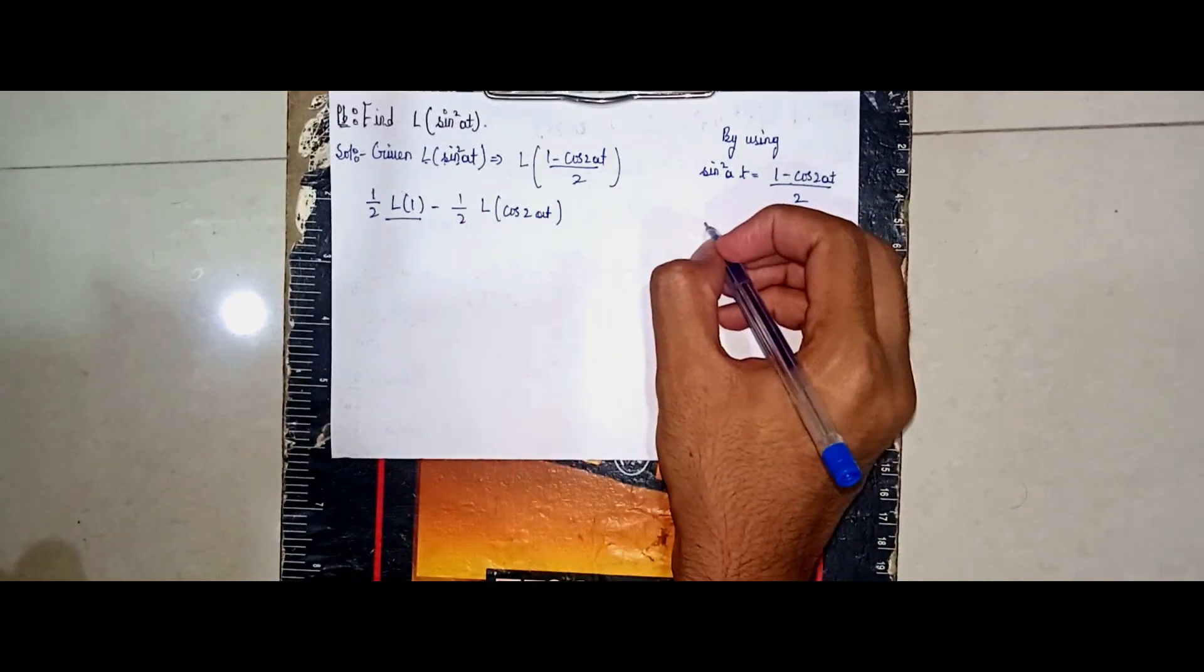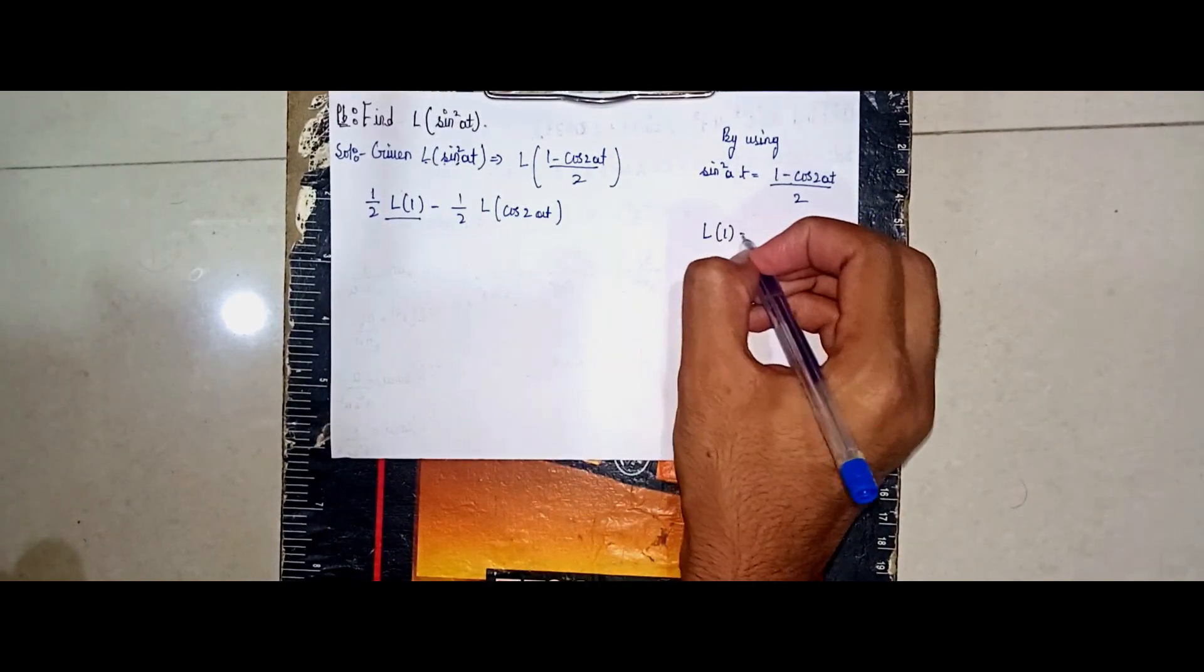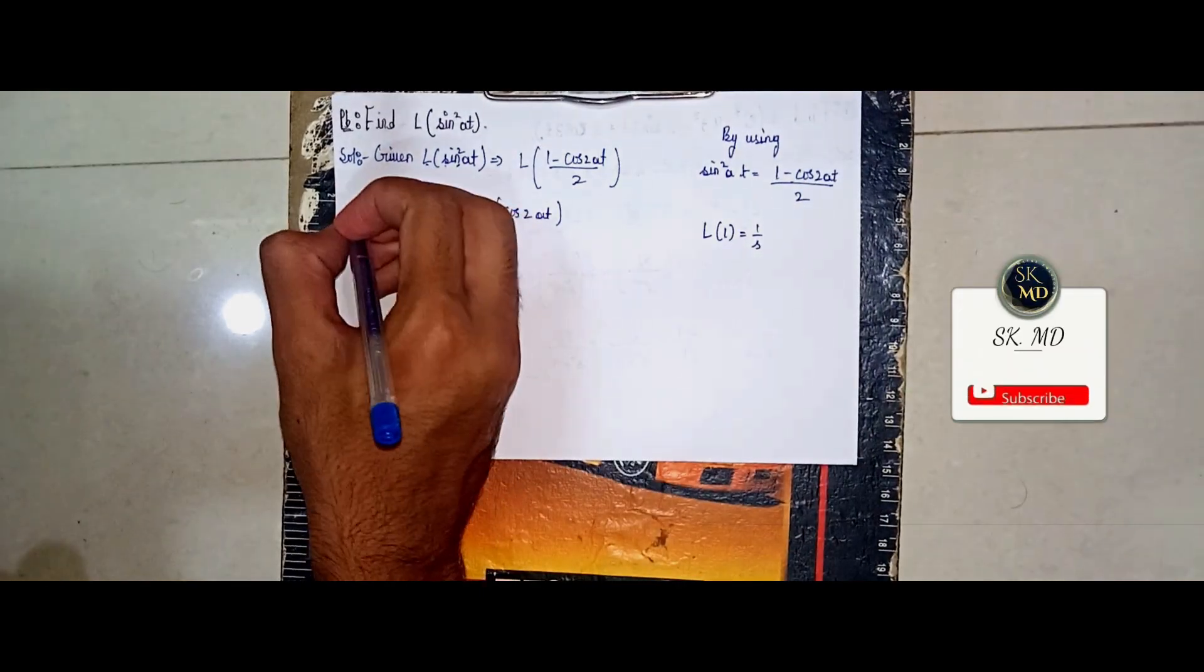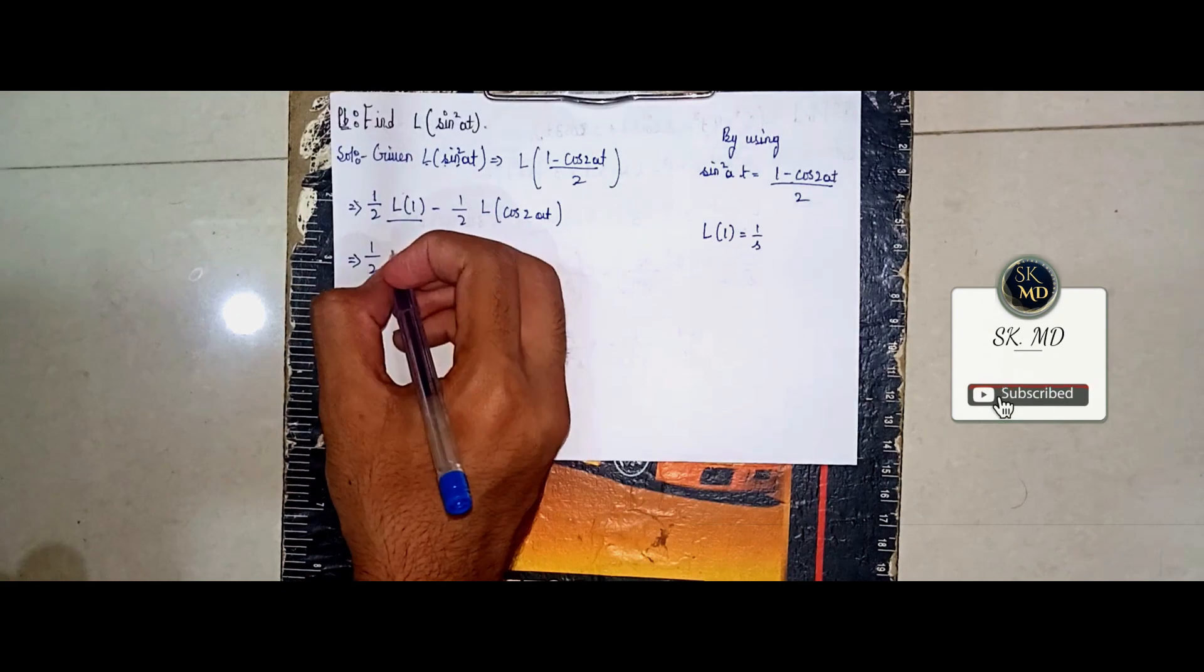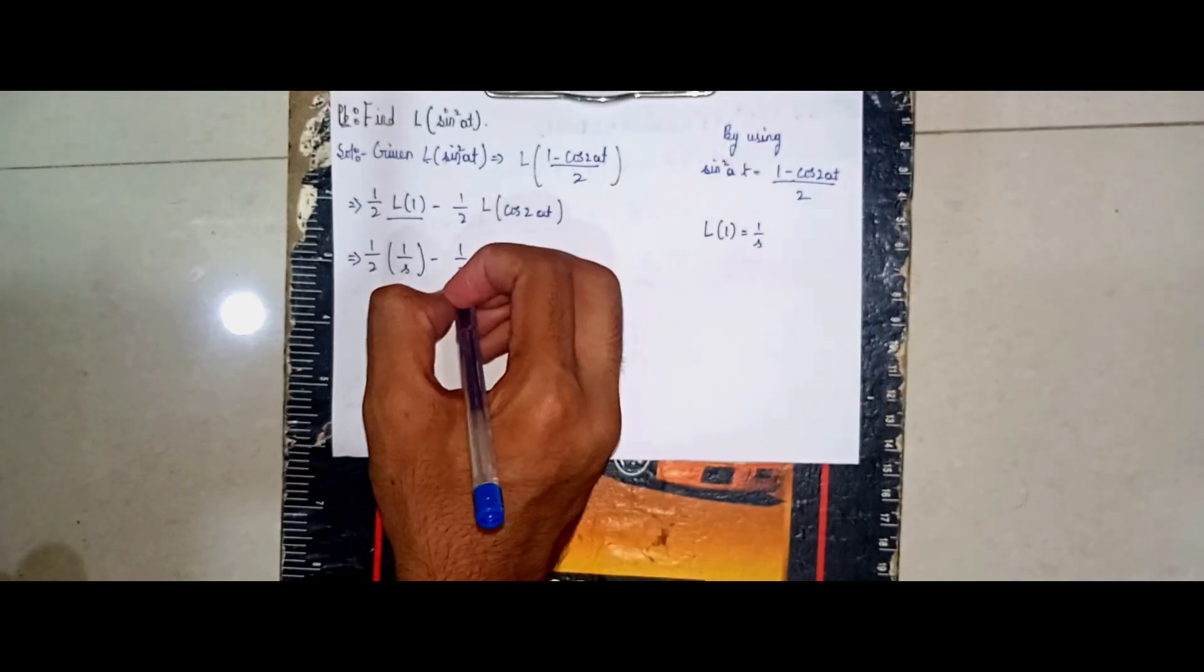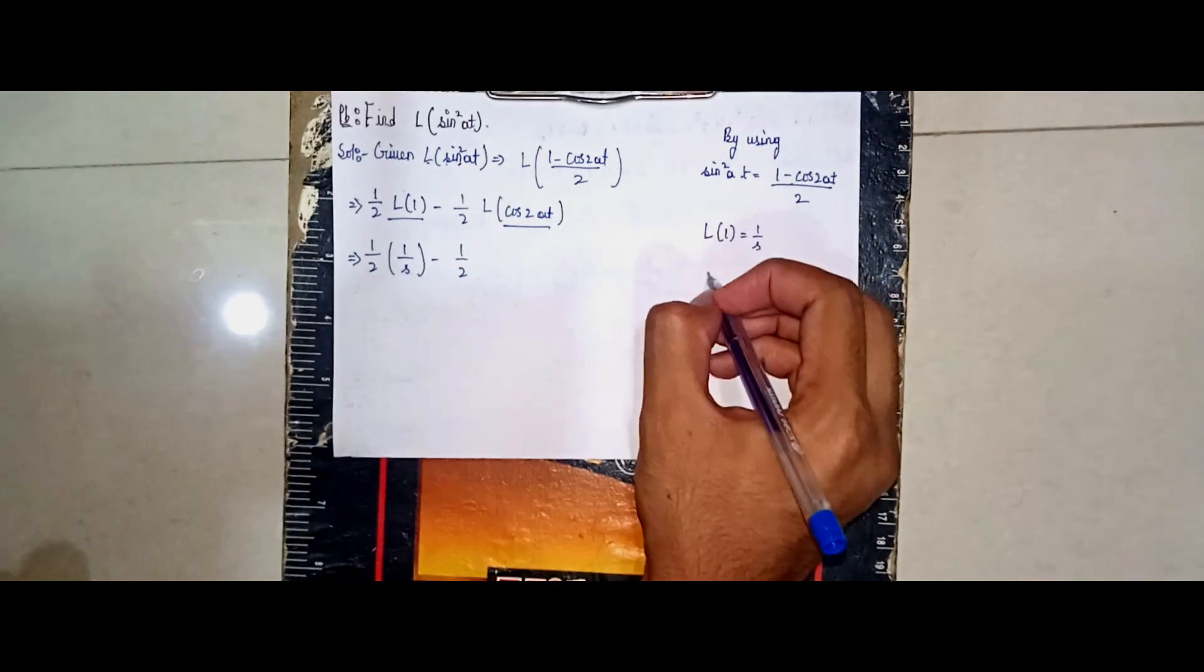Laplace of 1 equals 1/s, so it becomes 1/2 times 1/s, which is 1/(2s), minus 1/2. Now here, another formula: Laplace of...